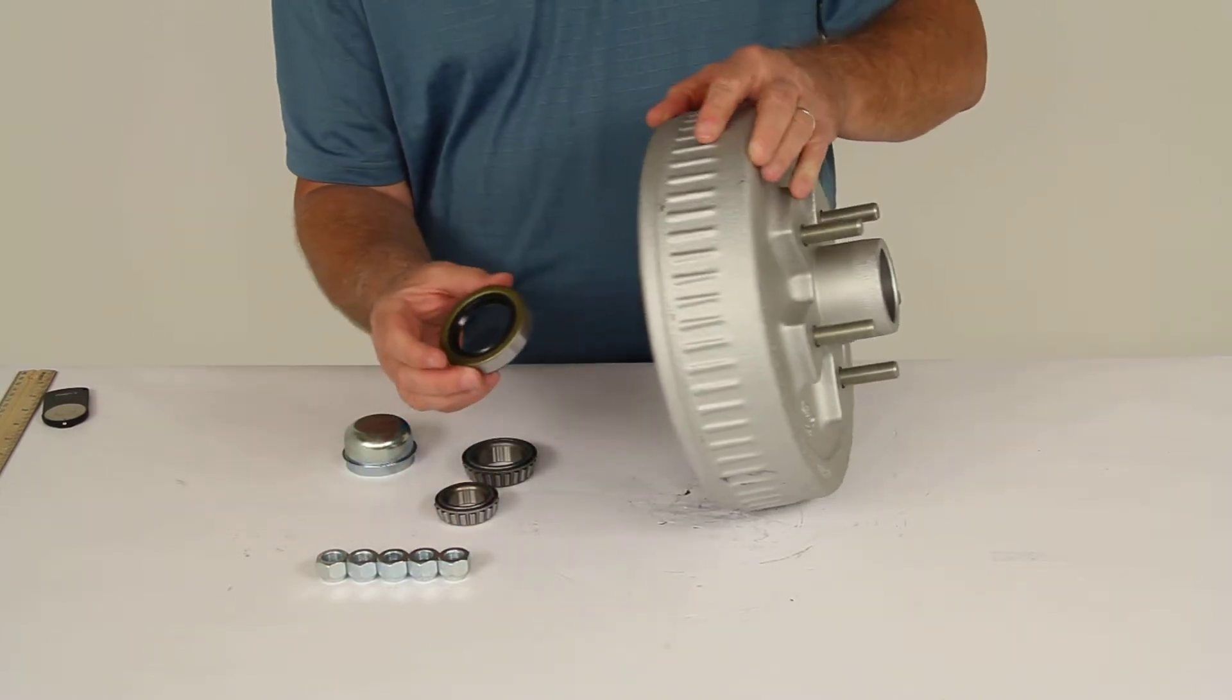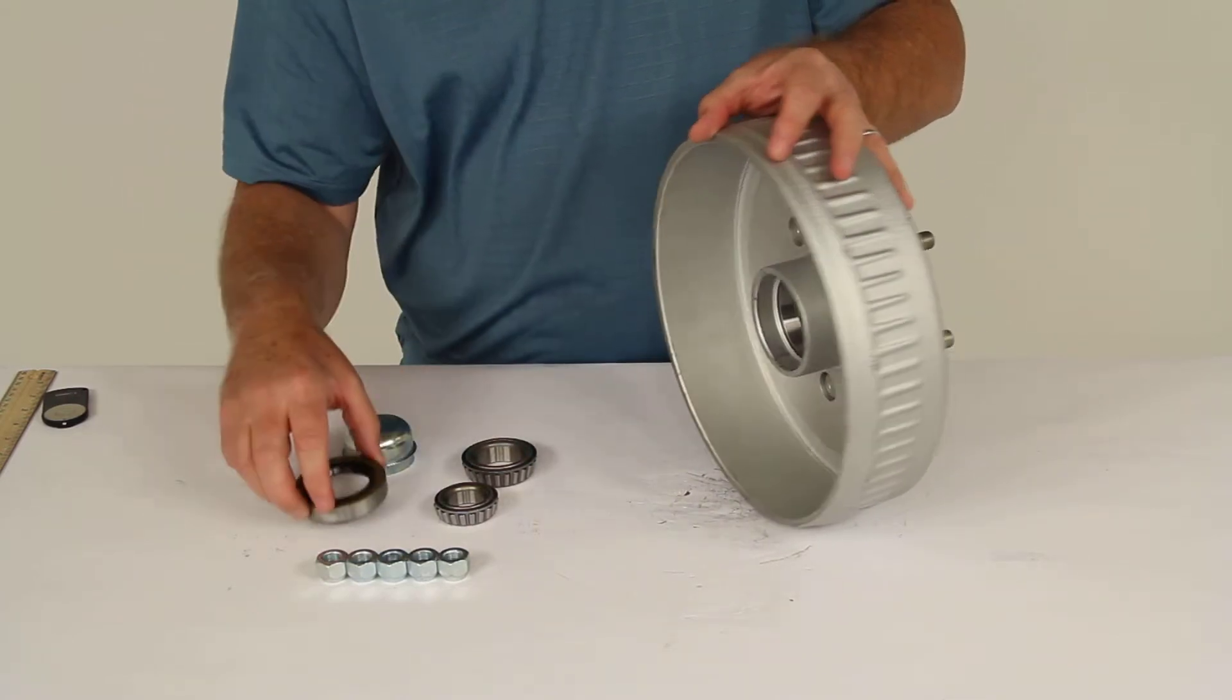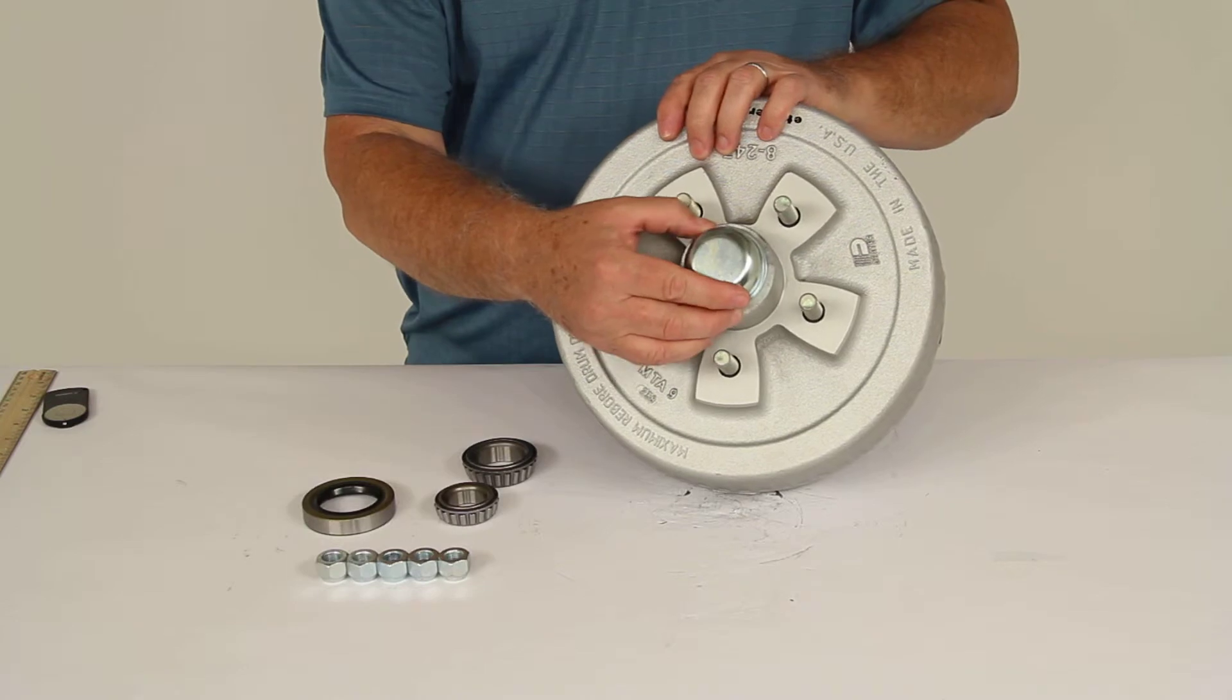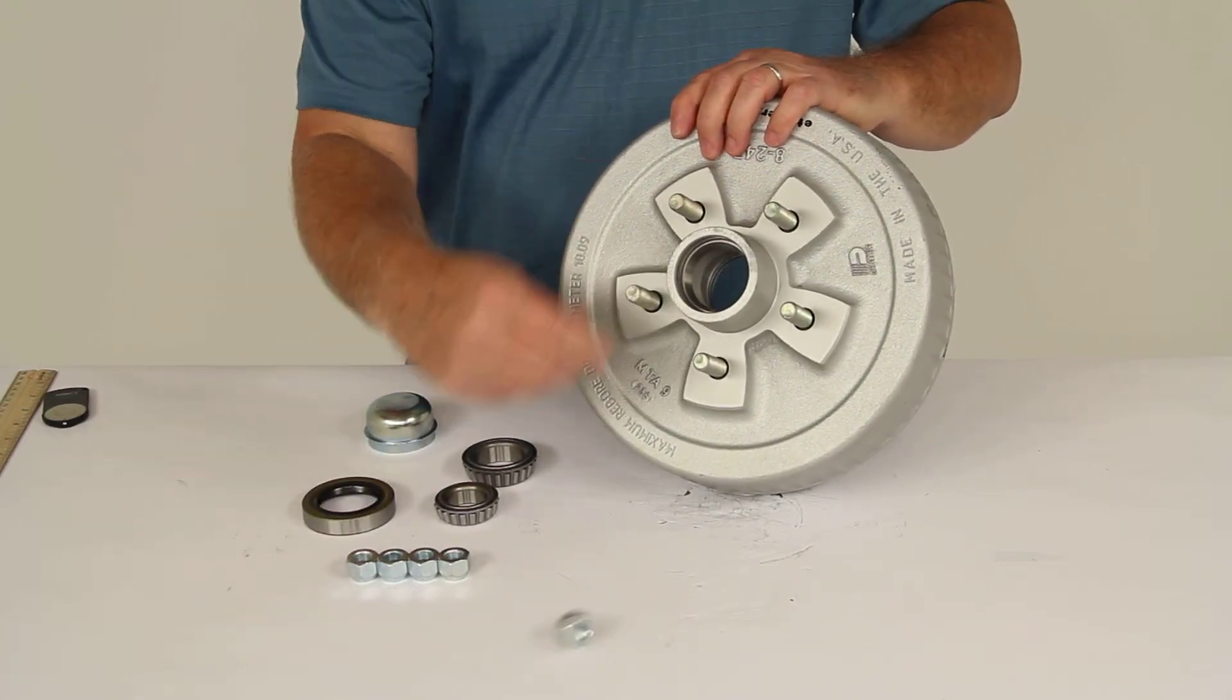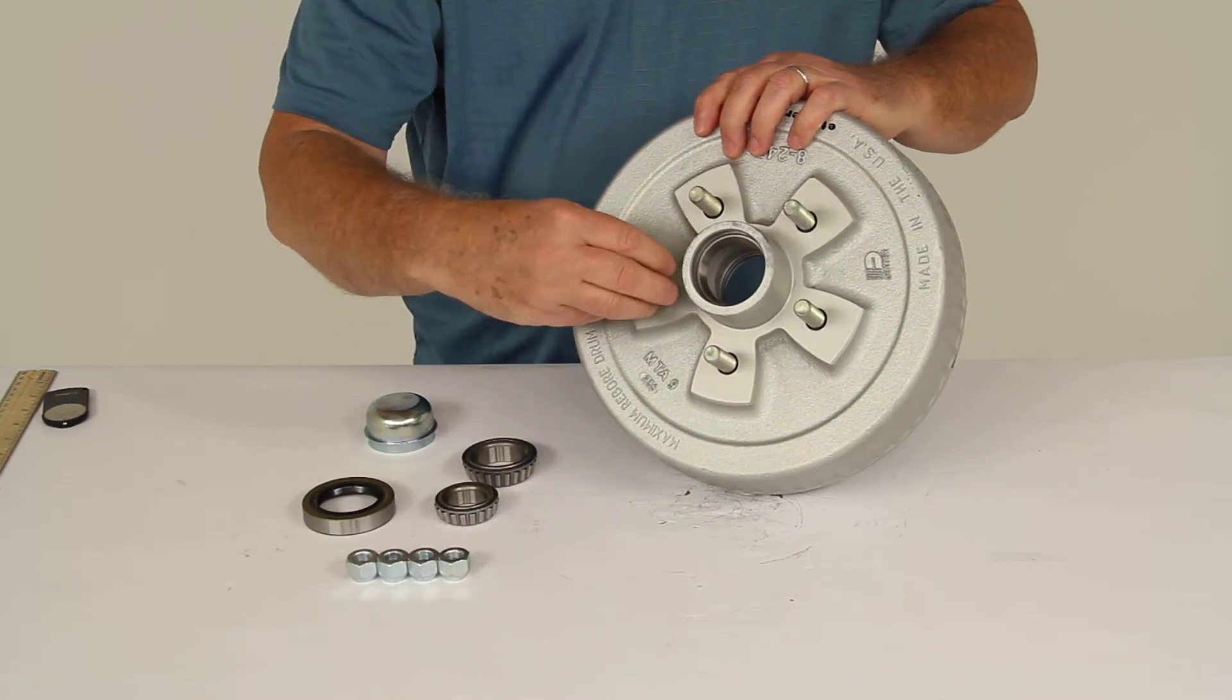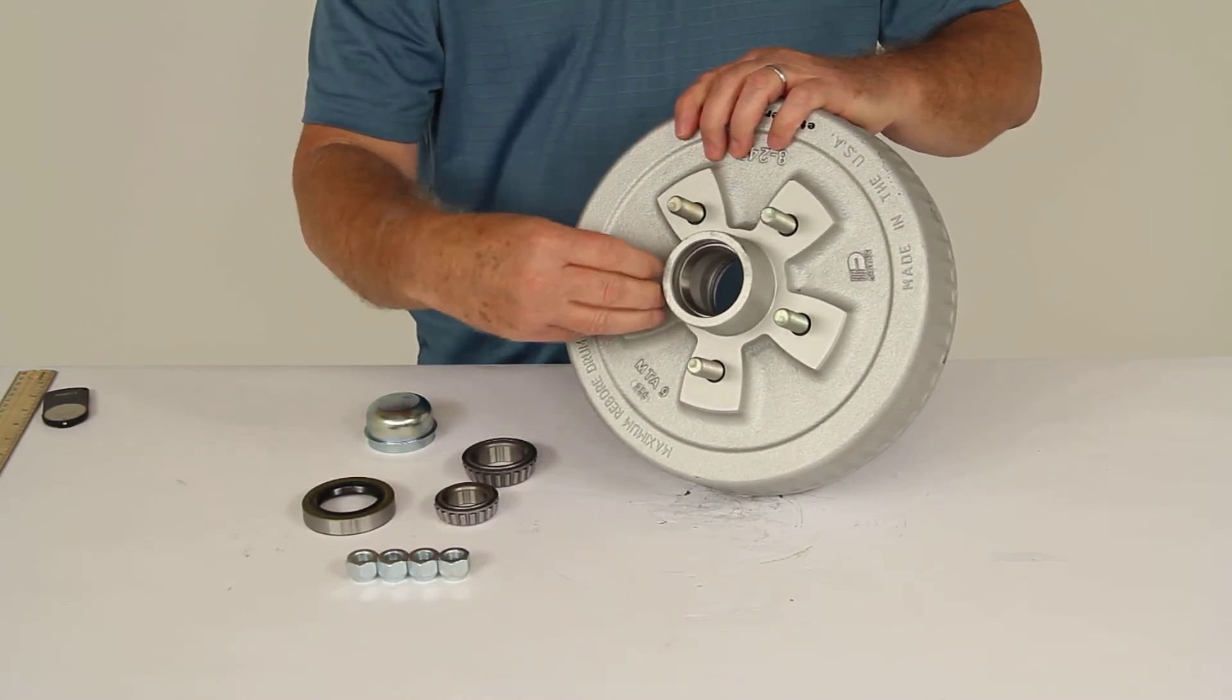The grease seal, which is 58846, goes on the very back after your bearing is installed. And then your grease cap. And then the 5-1/2-inch by 20 lug nuts that would be used once you put your tire and wheel on. The lug nuts would hold your tire and wheel assembly to this hub and drum.